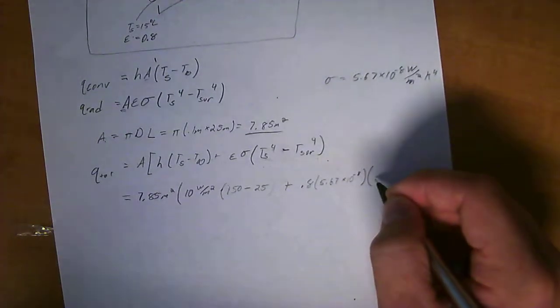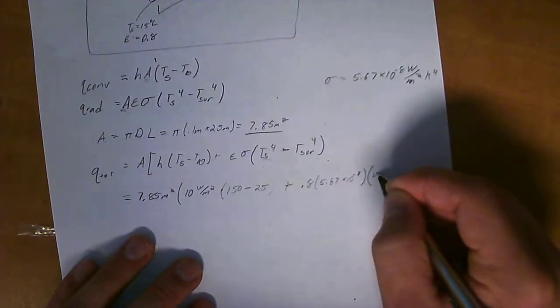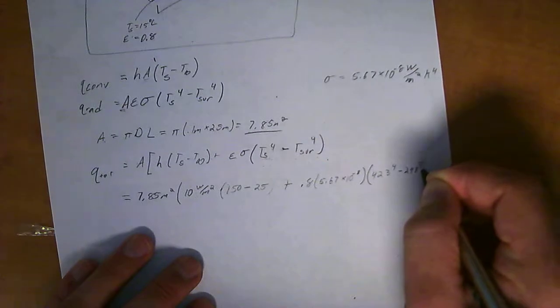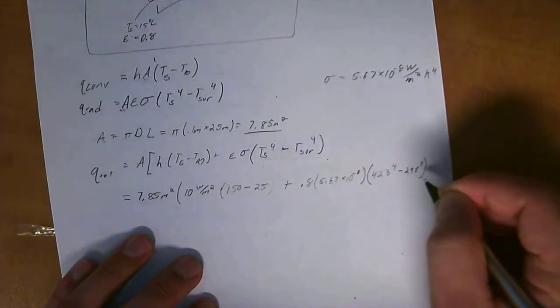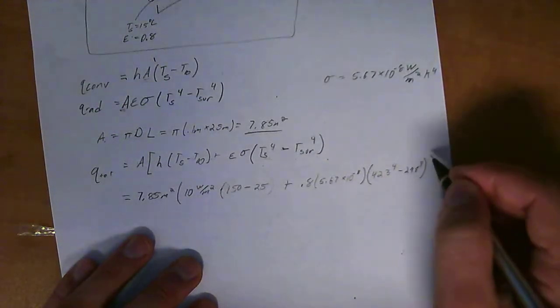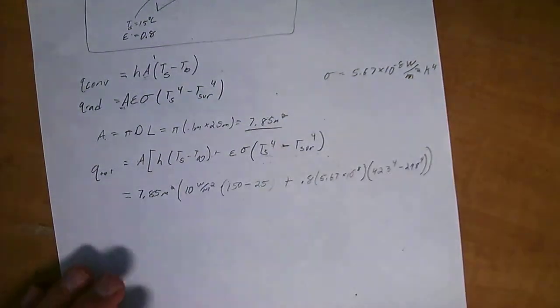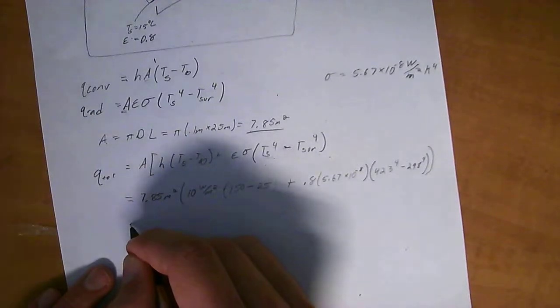So we're actually going to convert these to Kelvin, and you can do that. It's just plus 273 added onto the Celsius value. So 423 to the fourth Kelvin, minus 298 to the fourth Kelvin. And that's all closed off like that.